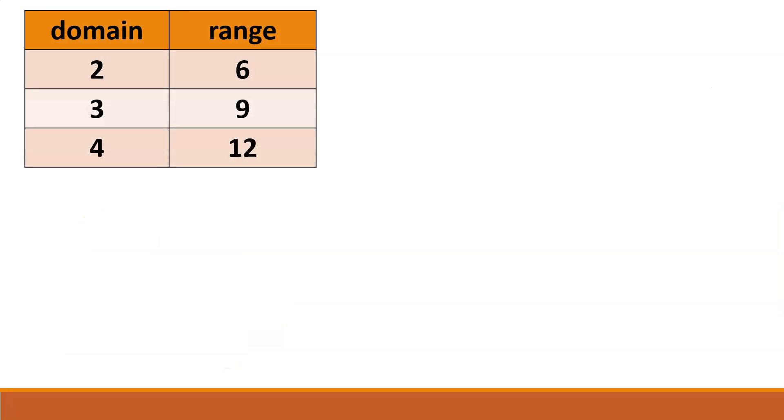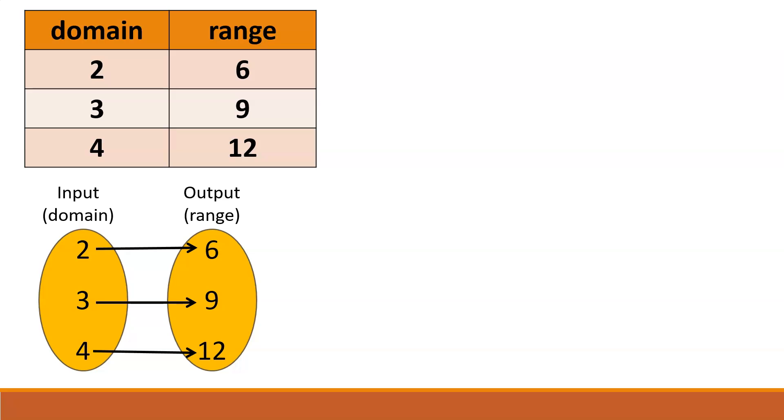A table is just one way to represent input-output pairs. We could also use what's called a mapping, in which the elements of the domain (the 2, 3, and 4) are represented as part of a set, and the elements of the range (6, 9, and 12) are represented as a second set. The mapping occurs when we show how the elements are related. In this case, 2 takes us to 6, 3 takes us to 9, and 4 takes us to 12.